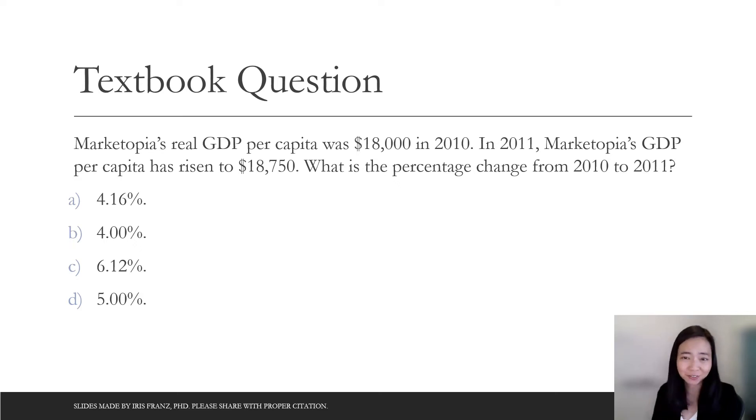And here is another question from the textbook. So suppose our GDP per capita was $18,000 in 2010 and $18,750 in 2021. Then what is the percentage change? What is the growth rate? So you are going to pause the video right now and try this question yourself. And then we can compare answer.